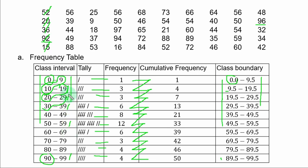You add the boundary value to the upper class limit. So you have 9 plus 0.5, you have 9.5. Now let's take 39 plus 0.5, you have 39.5.